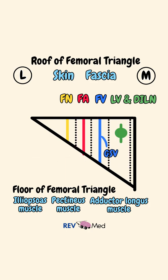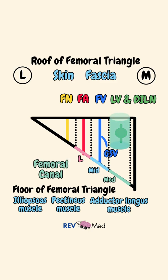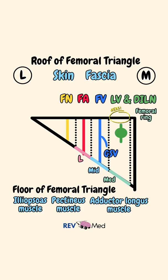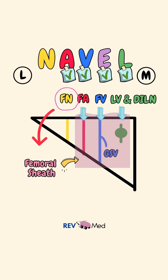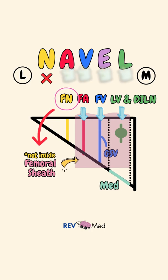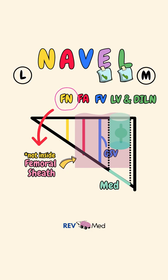The femoral sheath is divided into three parts: the lateral compartment, middle compartment, and the medial compartment. The most medial compartment is important — it forms a canal called the femoral canal, which has an opening ring labeled the femoral ring. Remember that the femoral sheath covers contents A to L, the nerve is not included, and the most medial compartment of the femoral sheath has the femoral canal, which covers the E and L parts: the empty space, lymph vessels, and deep inguinal lymph nodes.